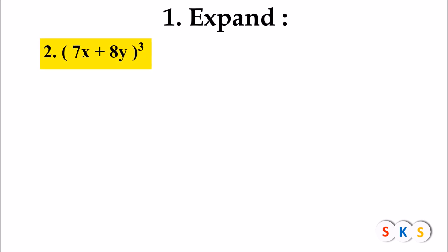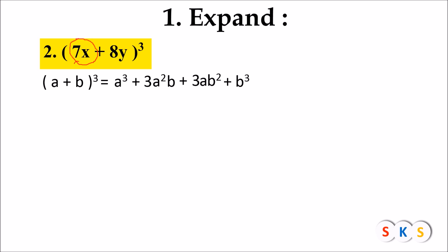Now question number 2: (7x + 8y) the whole cube. It is in the form of (a + b)³, so we will use the formula a³ + 3a²b + 3ab² + b³. The first term is 7x, so a = 7x, and the second term is 8y, so b = 8y.